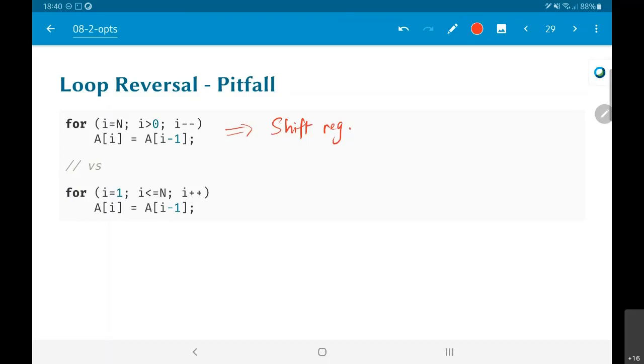Instead, if I do in the forward direction, i equal to 1 to n, then what I will find is that, I will basically do a of 1 equal to a of 0. After that, I will do a of 2 equal to a of 1, but a of 1 just got the value a of 0. So this is just basically a constant copy.